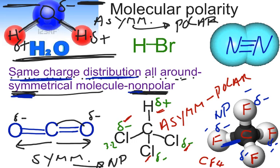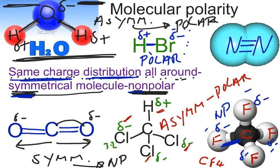HBr: bromine has a higher electronegativity, so bromine is negative and hydrogen is positive. Since we only have one bond here, the bond polarity and the molecular polarity will be the same thing. This molecule is asymmetrical — the electron cloud will be more on the bromine side — and this HBr molecule will be polar because it's asymmetrical.